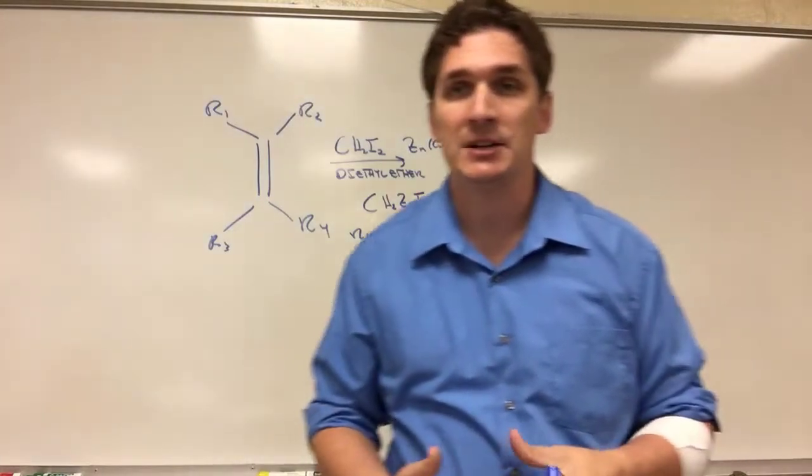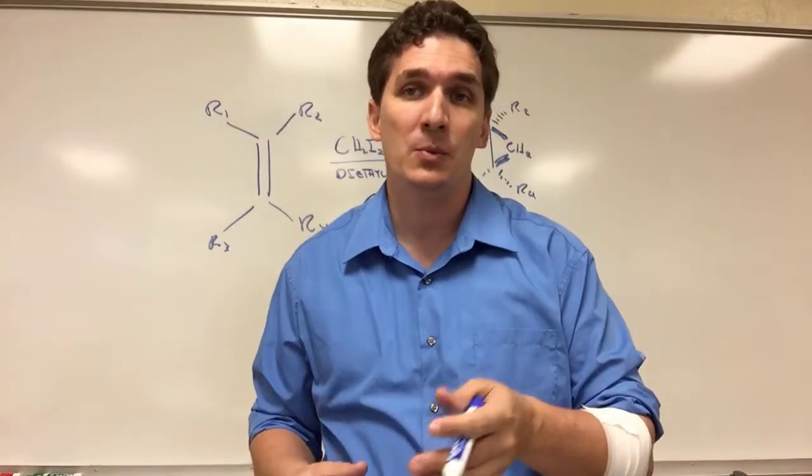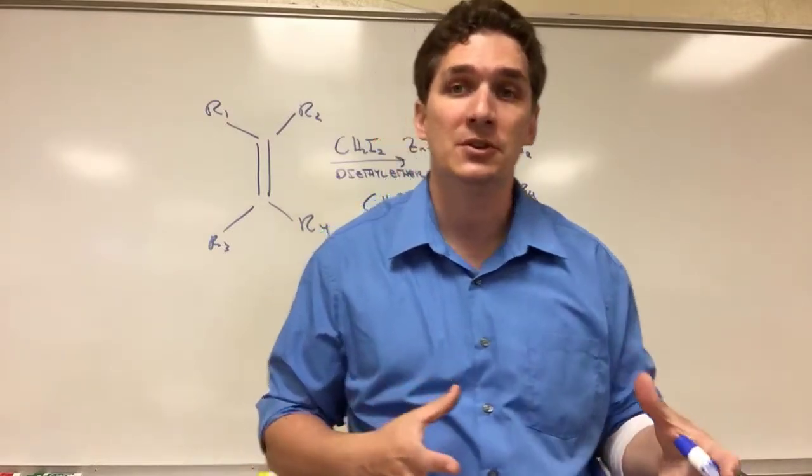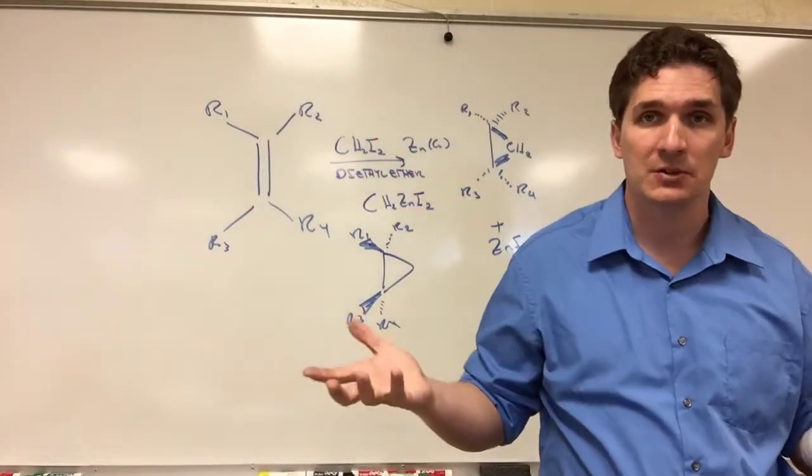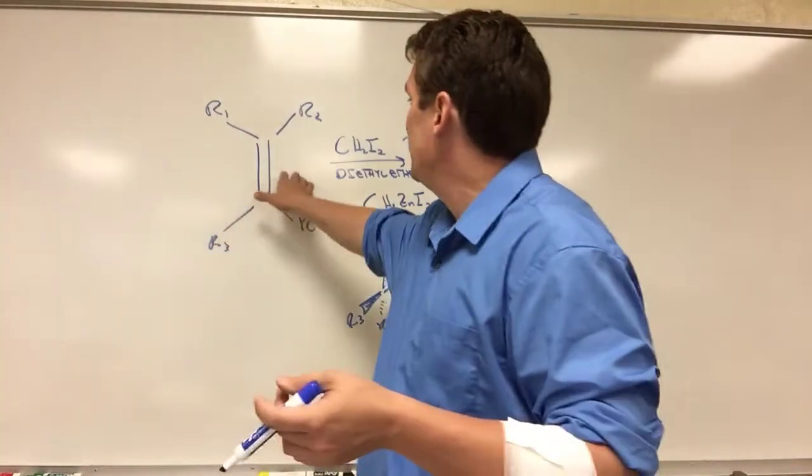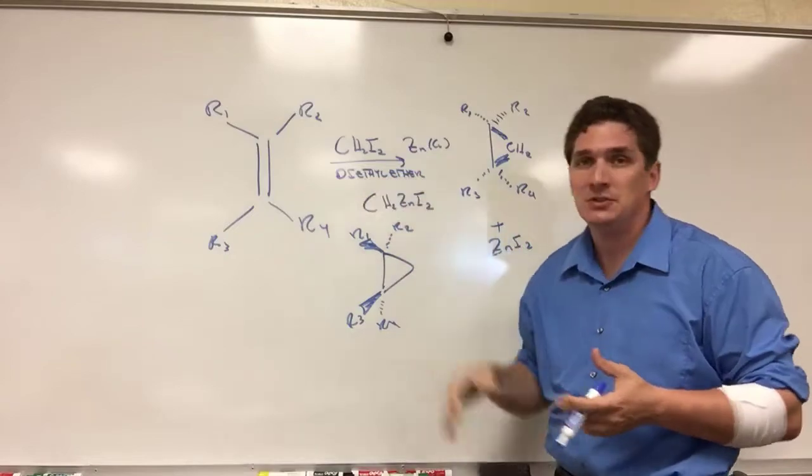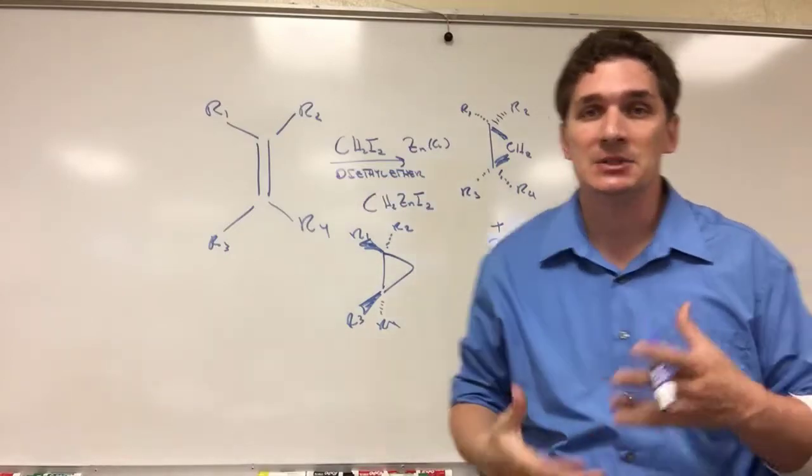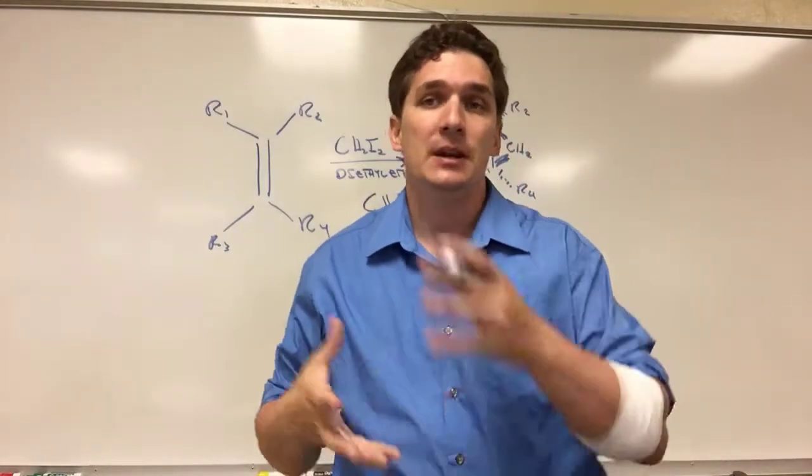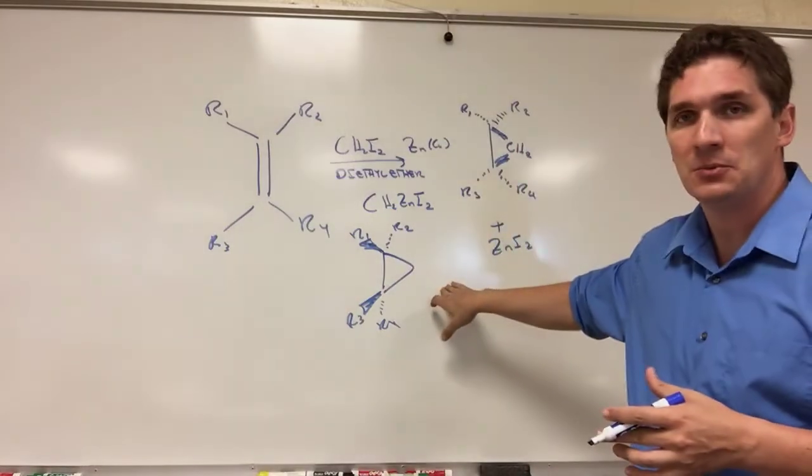So this is the product of the Simmons-Smith reaction. If you want to form a cyclopropane functional group within your carbon chain, or you just want to form cyclopropane in general, take your alkene CH2I2 zinc supported on the copper, and do this all in diethyl ether so you don't get any type of side reactions with oxygen, run it, and this is your end product.